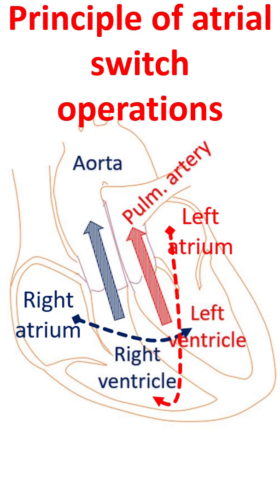Atrial switch operations were the initial operations developed for the treatment of transposition of great arteries. In transposition of great arteries, the aorta arises from the right ventricle and pulmonary artery from the left ventricle. Normally, the aorta originates from the left ventricle and the pulmonary artery arises from the right ventricle.